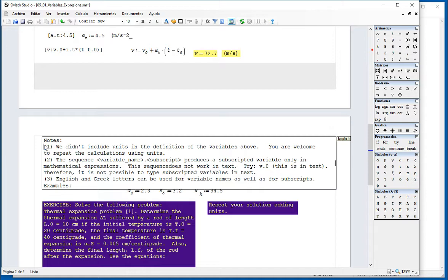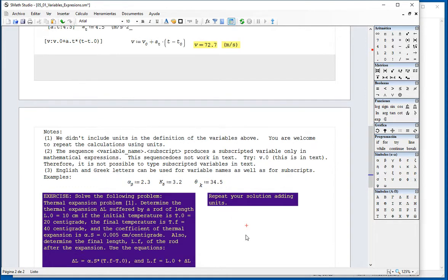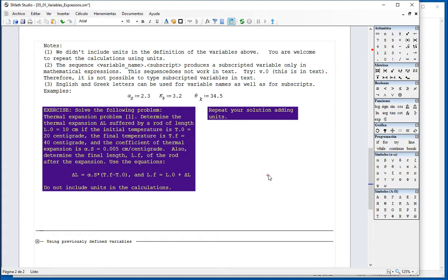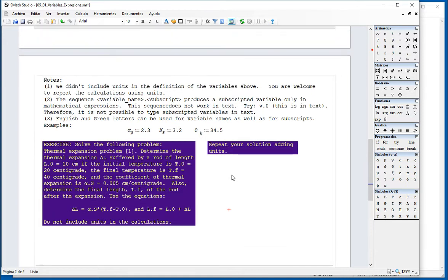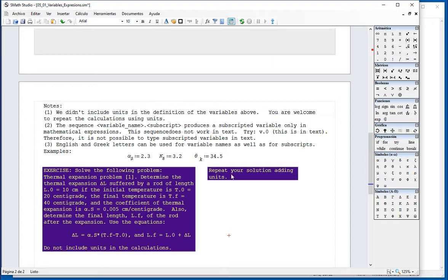And it says in this example, we didn't include the units. The sequence variable dot subscript produces the subscript variable. And you can also use English and Greek letters. For example, these are all Greek letters with the subscripts. I'm asking you to do this exercise using subscript and the way that you type that is alpha dot S, for example. And so you are welcome to try these results in your own SMS Studio file. To give you an idea, I'm just going to write here the expression in the mathematical entry. Do D, control G, upper case L. And I'm going to use the assignment operator, colon. Alpha is A, control G. Sorry, I jumped out of there. I should be back here. Dot S, upper case S. Times, parenthesis, T dot F, minus T dot 0.